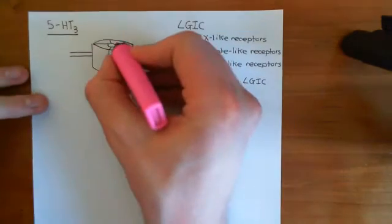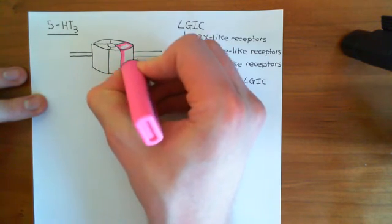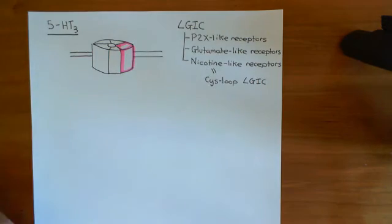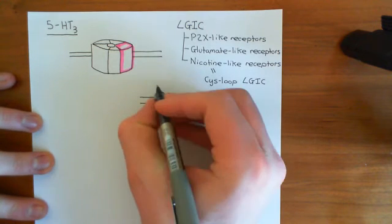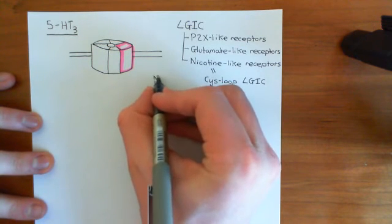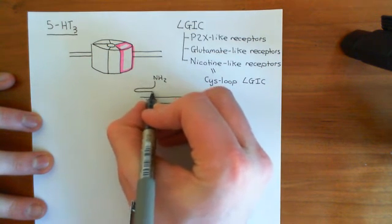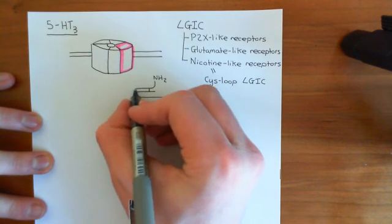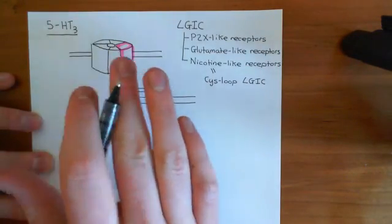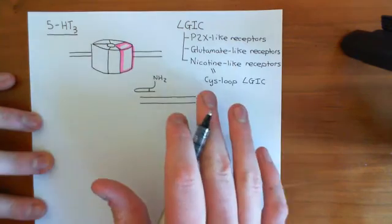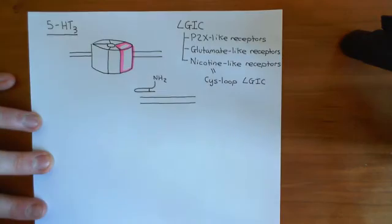I'm going to pull out one of these subunits that makes up a fifth of the 5-HT3 receptor so that we can have a look at its membrane-spanning topology. Let's draw the membrane here. The amino terminus of the polypeptide is extracellular, and then you have a large extracellular structure known as the cys-loop. This line represents the polypeptide, and everything applies exactly the same to all other receptor types in this superfamily of cys-loop ligand-gated ion channels.